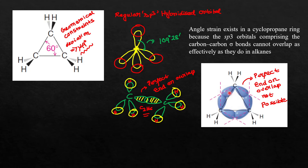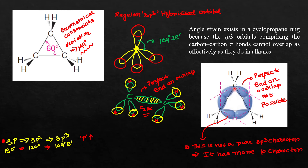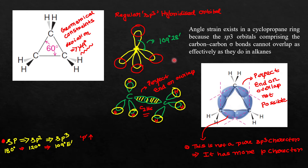Moreover, as we go from sp to sp2 to sp3 hybridized orbitals, the p-character increases and the angle between the lobes decreases. In cyclopropane, the angle is much lower than 109 degrees, so these orbitals have more p-character than a typical sp3 hybridized orbital. This is why the cyclopropane ring is much less stable compared to cyclohexane or any other four- or five-membered rings — it has a huge angle strain causing inefficient orbital overlap.